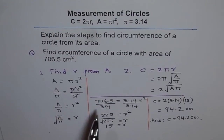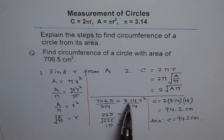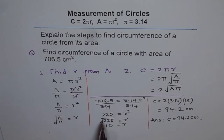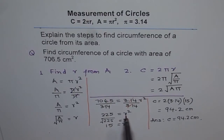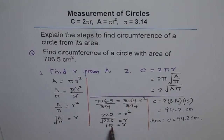Let me show you once more. First step: we wrote area equals πr², and area is given as 706.5, so 706.5 equals 3.14r². To isolate r, we divided both sides by 3.14, so the 3.14s cancel and we get r² equals 706.5 divided by 3.14, which gives 225. Square root of 225 is 15, so r equals 15 — the radius of the circle is 15.